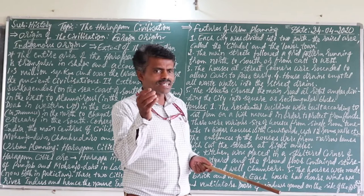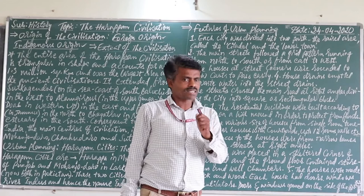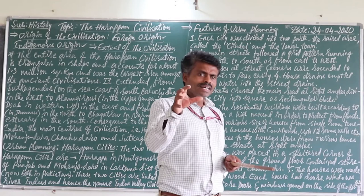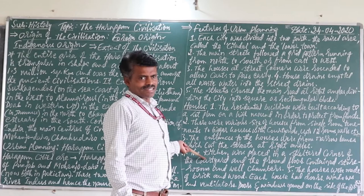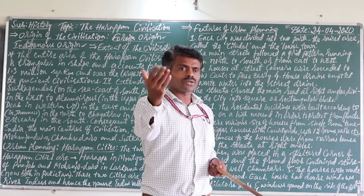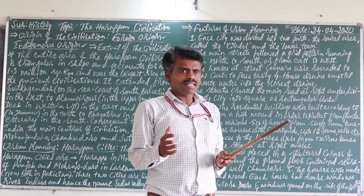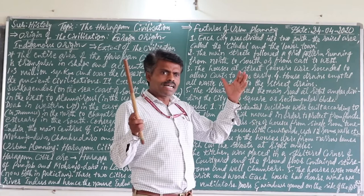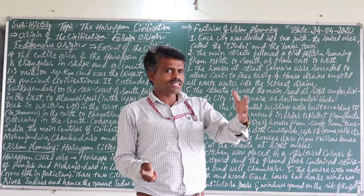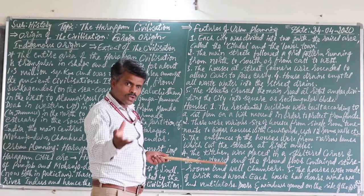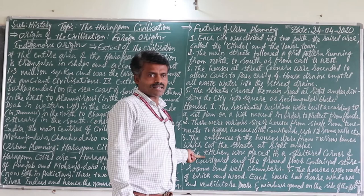I need to tell you extra information here. Today you might have heard about the Public Distribution System or PDS — the government distributes food grains from ration shops to people. That idea was taken from the Harappan civilization. Today we store food grains in Food Corporation of India godowns — FCI — because farmers produce surplus food grains we need to preserve for future use. That is also an idea from Harappan civilization.